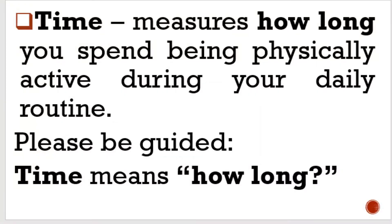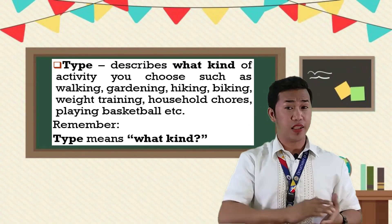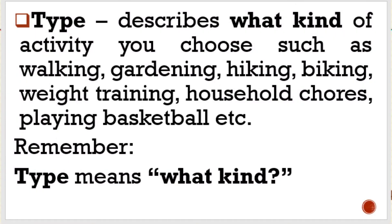Time measures how long you spend being physically active during your daily routine. Time means how long. Type describes what kind of activity you choose, such as walking, gardening, hiking, biking, weight training, household chores, and playing basketball, etc. Remember, type means what kind.